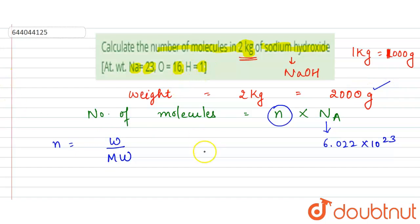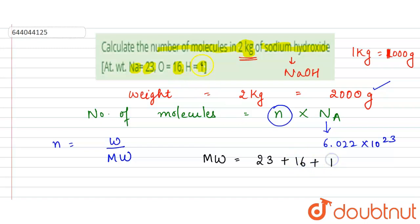The molecular weight of NaOH is the sum of atomic weights: sodium (23) + oxygen (16) + hydrogen (1), which equals 40 grams per mole.